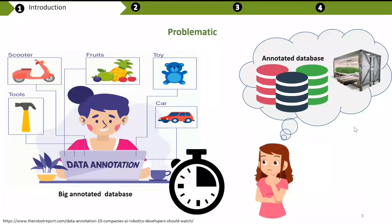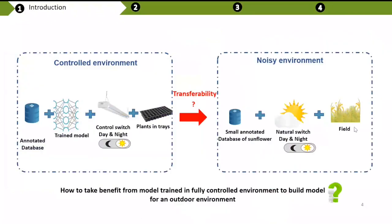There is also not a lot of data available in field conditions. We have many annotated datasets acquired in controlled environments. The question is: can we use these already existing datasets? We have large annotated datasets and trained models from indoor environments, and smaller datasets from noisy outdoor environments. How can we take benefit from these datasets and models to build another model?